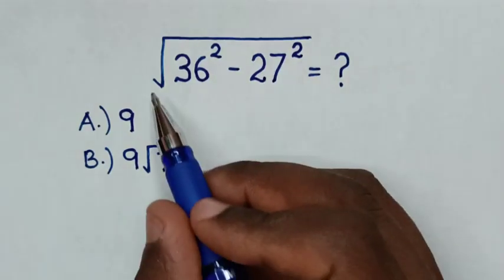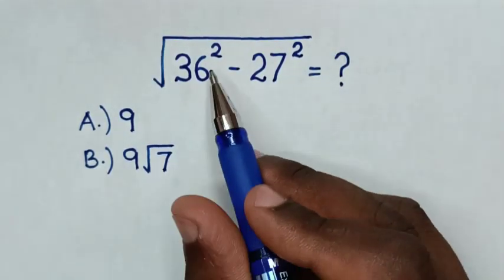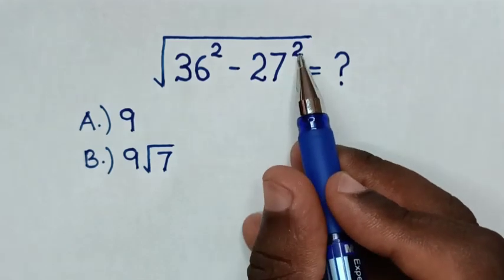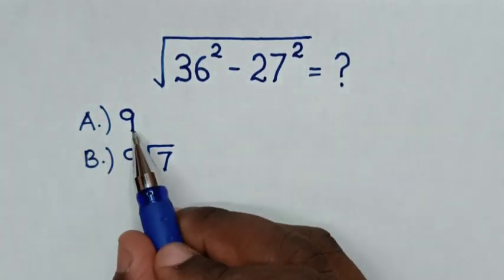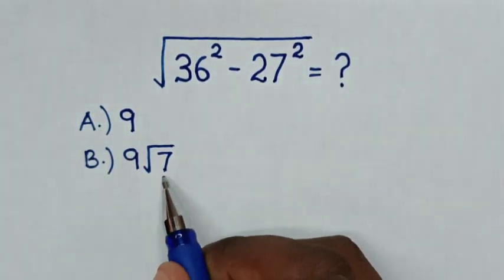Hello! How to solve square root of 36 square minus 27 square? Select between the answers A, 9, B, 9 square root of 7.